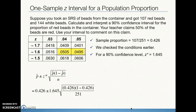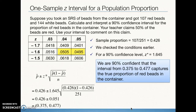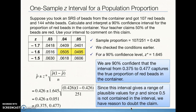We plug everything into our confidence interval format — either as point estimate plus or minus margin of error, or as (lower boundary, upper boundary). Our conclusion: we are 90% confident that the interval from 0.375 to 0.477 captures the true proportion of red beads in the container. Since 50% is not in our interval, we do not believe the teacher's claim.